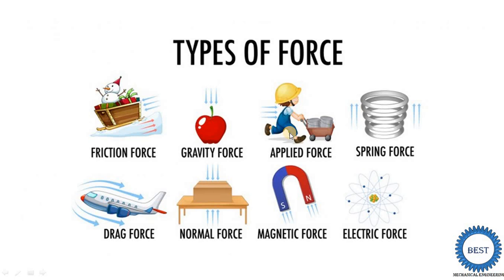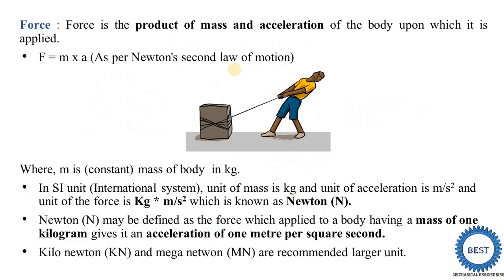Now we understand the various types of force. Force has various types. Earlier we discussed pull force and push force. When a person tries to pull a body, that is called the pulling force; when pushing the body, it is called the push force. Similarly there is tensile force and compression force. When two persons pull a body from both sides, it is called tensile force. When two persons push a body from both sides, it is called compression force.